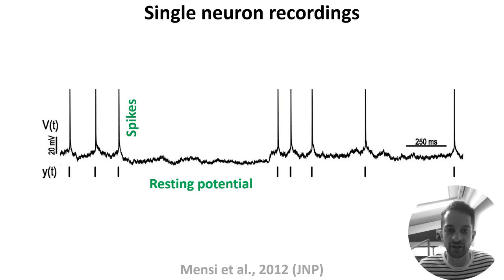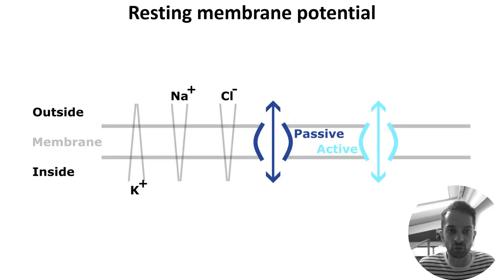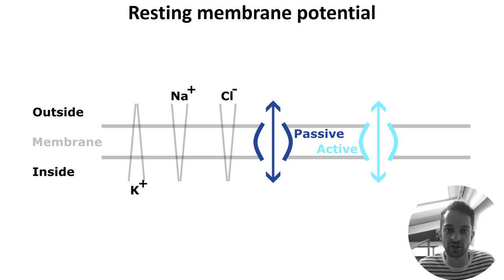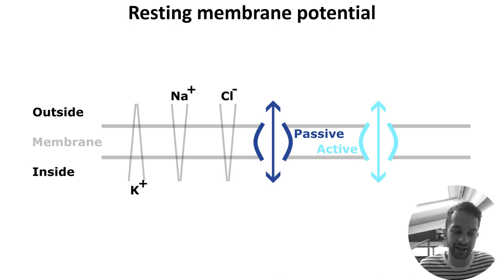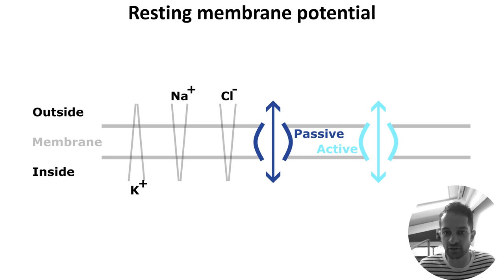So how do neurons generate their resting potential and spikes? Well, their cell membrane plays a key role. Remember that the cell membrane separates the inside of the cell from the outside. Importantly, ions — charged particles like sodium and potassium — are unevenly distributed across the membrane. For example, potassium is at a higher concentration inside, while sodium and chloride are at higher concentrations outside. This means there are both chemical and electrical gradients across the membrane. However, these charged ions can't cross the membrane directly and instead must use specialized channels, which are proteins embedded in the membrane.